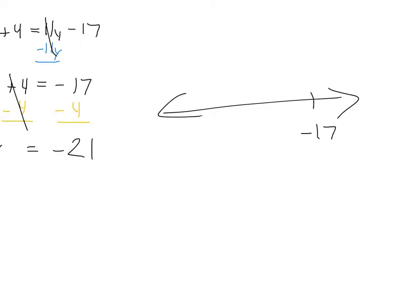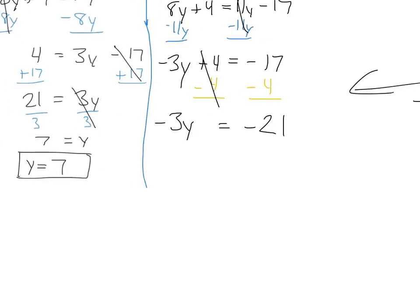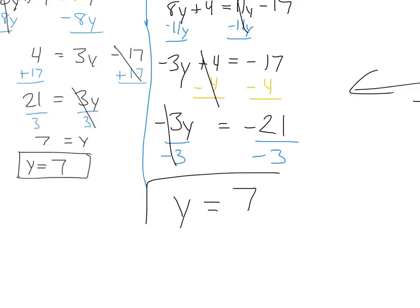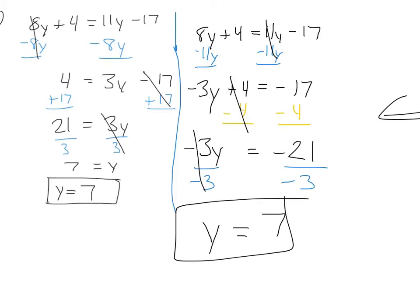Now I deal with addition and subtraction of constant terms first. Subtracting 4 from both sides — the golden rule of solving equations. So negative 3y plus 4 minus 4 cancels, equals negative 17 minus 4. That's like taking 17 plus 4, which is 21, and making it negative — so negative 21. Lastly, divide both sides by negative 3. Those cancel, leaving y equals negative 21 divided by negative 3. Negative divided by negative is positive, giving us positive 7. It doesn't matter which way you do it — subtracting 8y first or 11y first — you get the same answer.